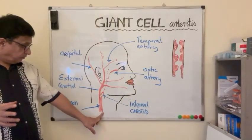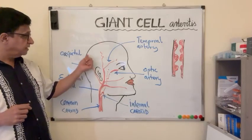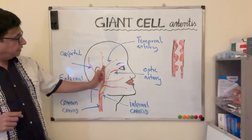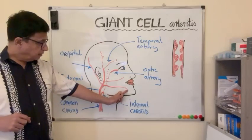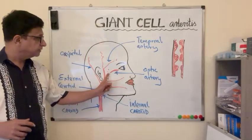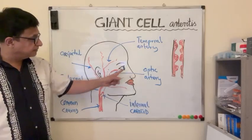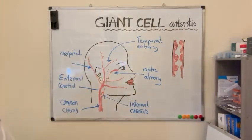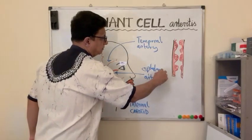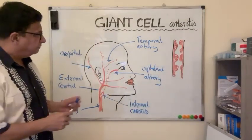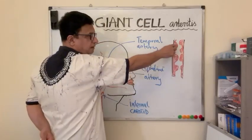This is the common carotid artery and it divides into internal carotid artery and external carotid artery. External carotid artery supplies the occipital area and two branches of the temporal area, and one branch to the mandible and jaw. Internal carotid artery goes to the Circle of Willis and from there it goes to the ophthalmic artery.